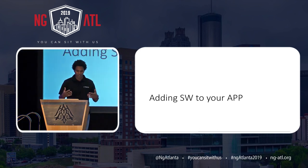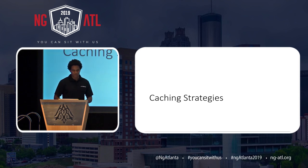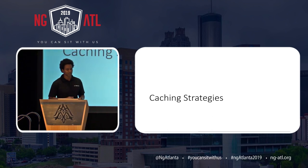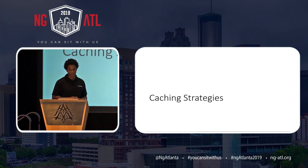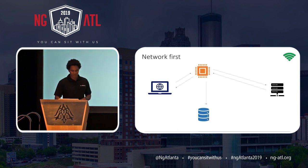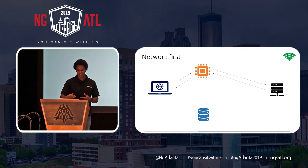We know we add a service worker to the root of our application. Now let's talk about actually using it — specifically caching strategies. There are different ways you can manage data in the browser. We'll talk about a few of them because implementation is up to you. One strategy — which may not always be the best — is network first. The idea is that you always try to get the latest data from the network.